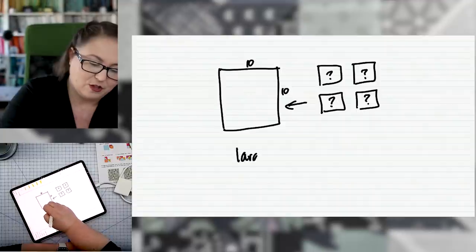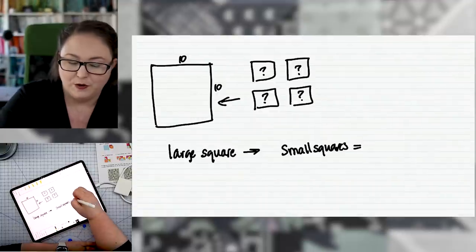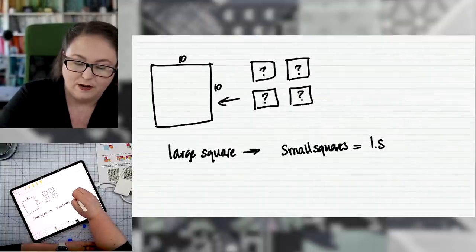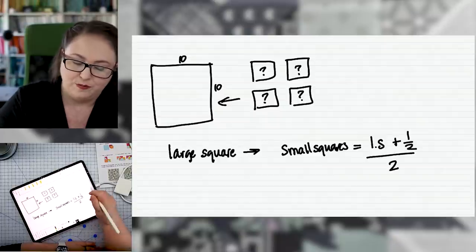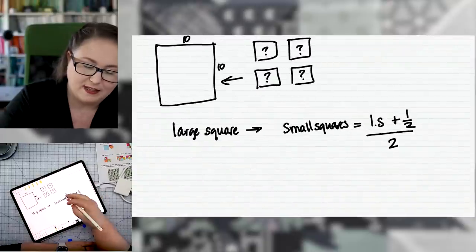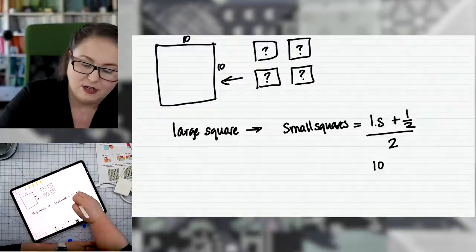If you're starting with a large square, your small squares are going to equal your large square size plus one half divided by two. So in this case, we have a 10 inch square that we want to use up